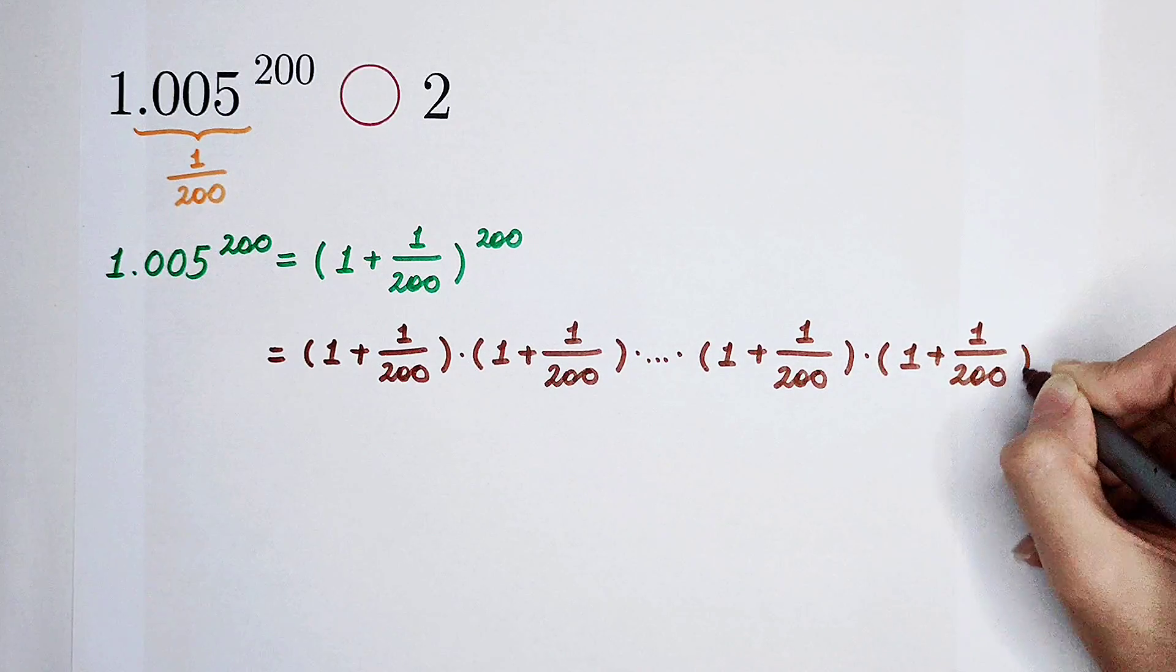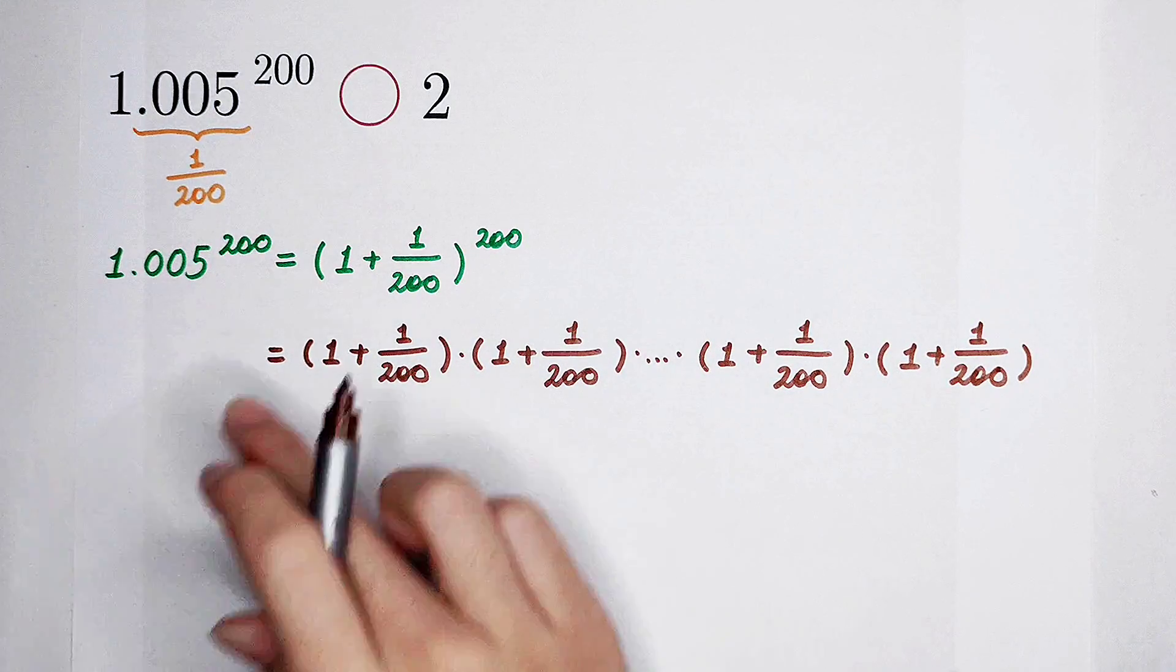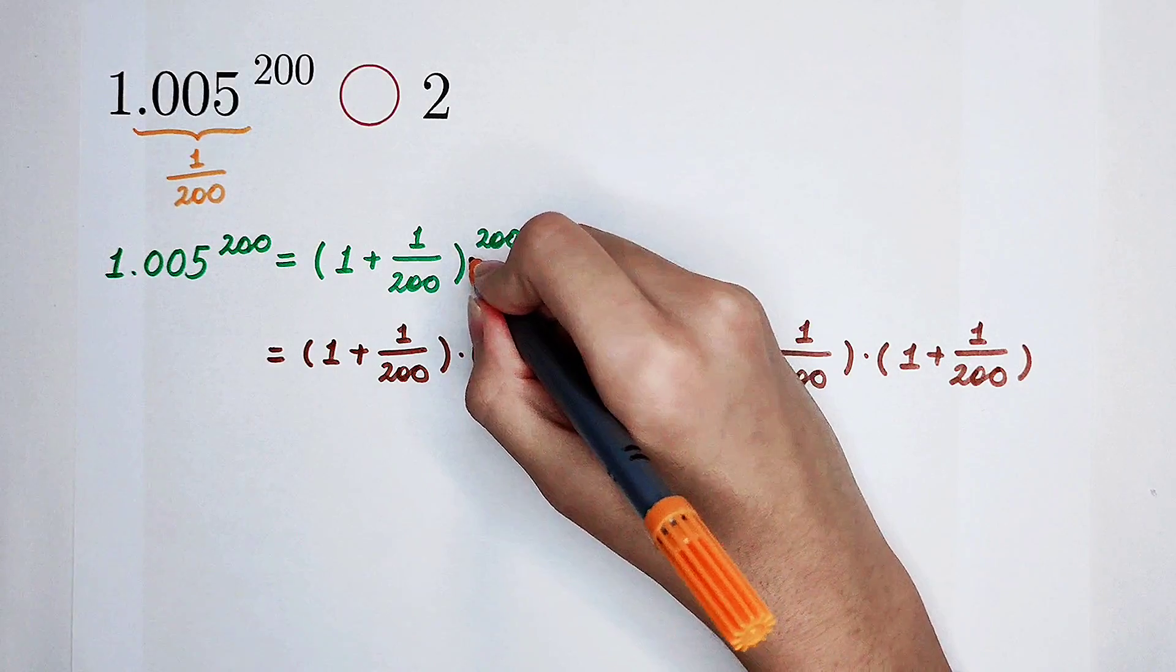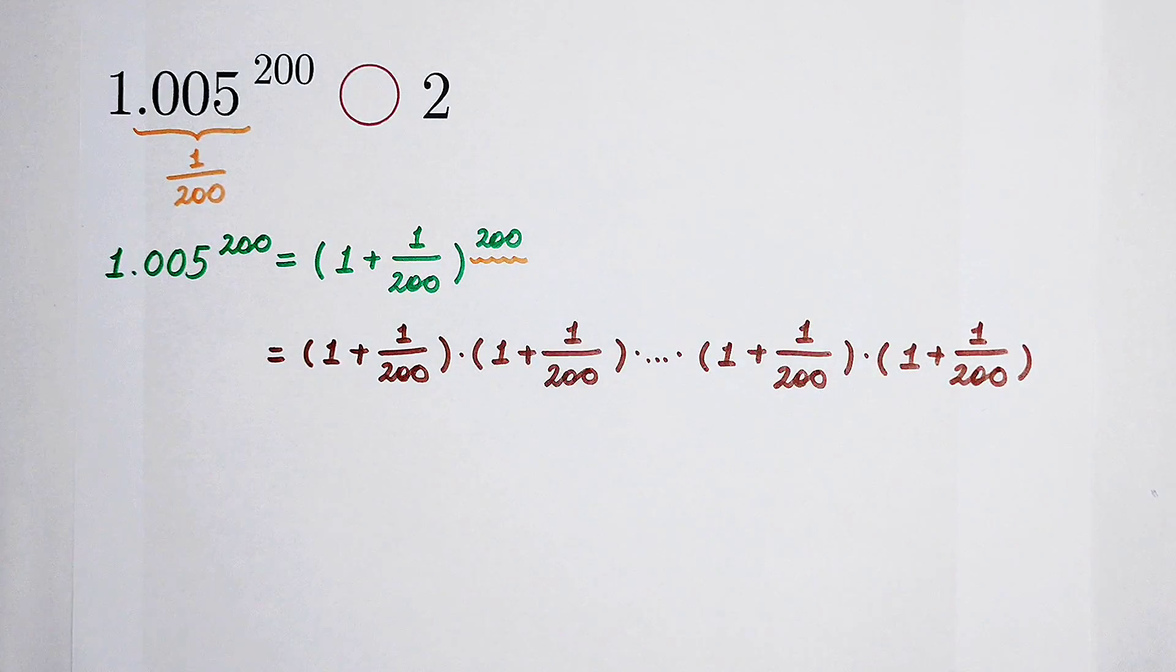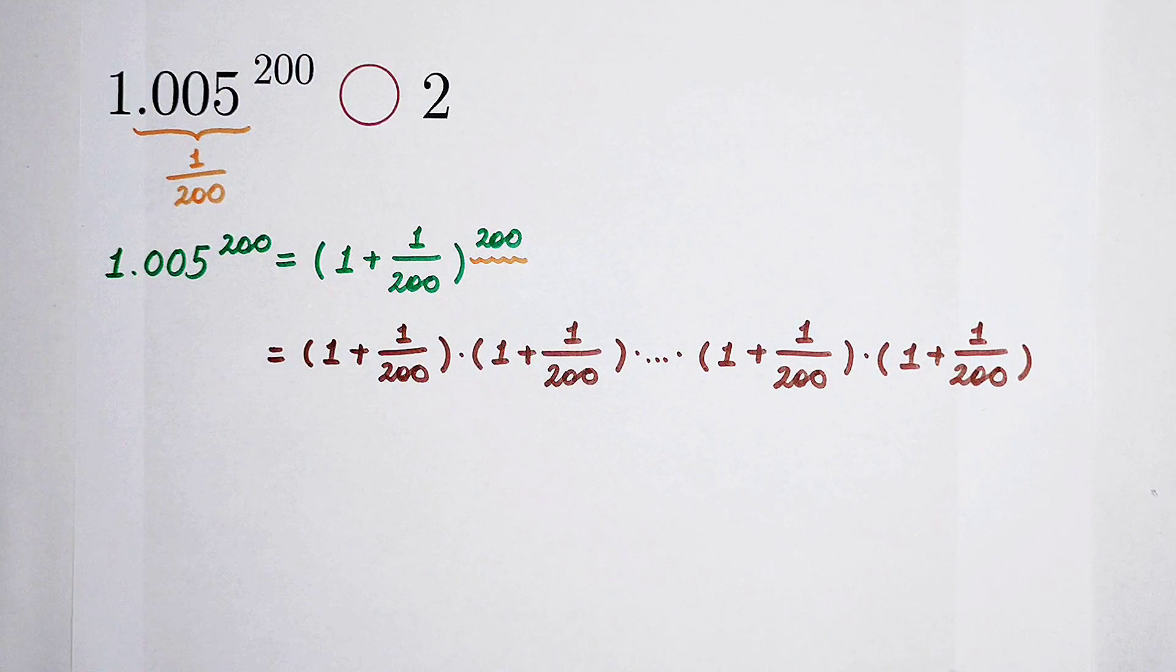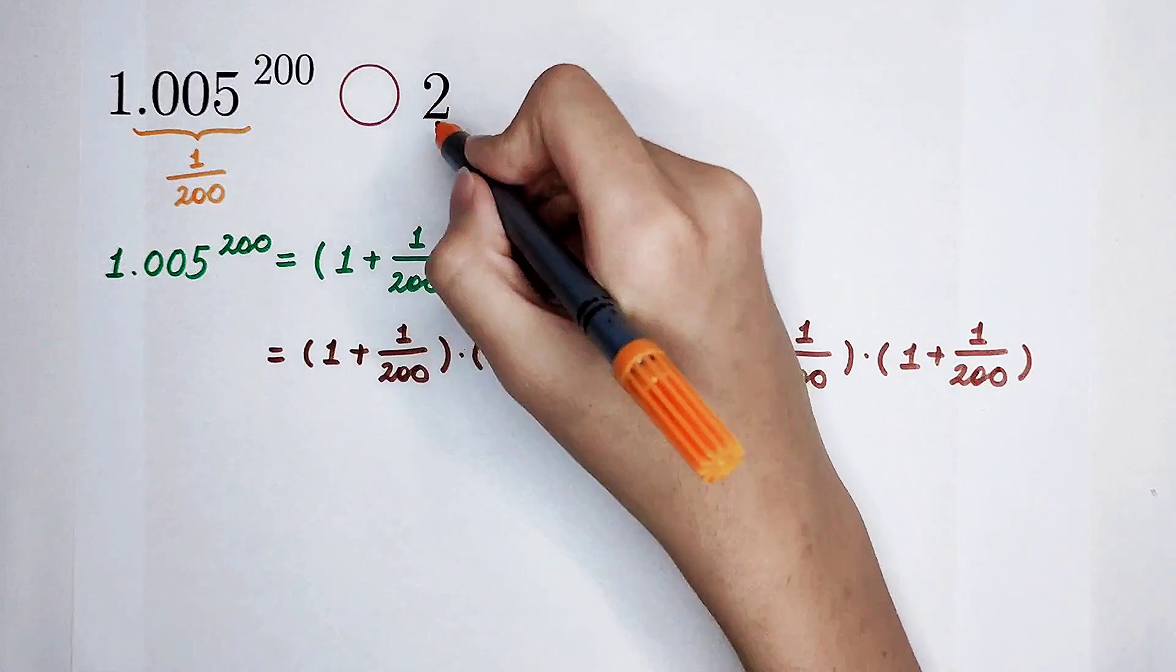Now, I have a question. How many 1 plus 1 over 200 here? Of course, 200, because the exponent is 200. We have already analyzed this number, which is on the left-hand side. Now, we should analyze these two.